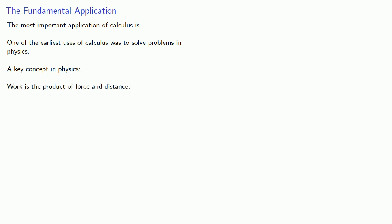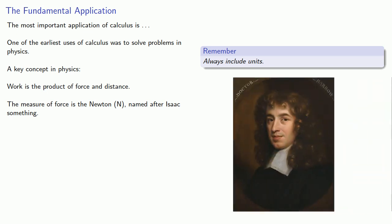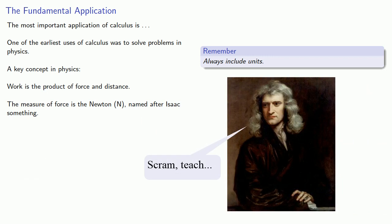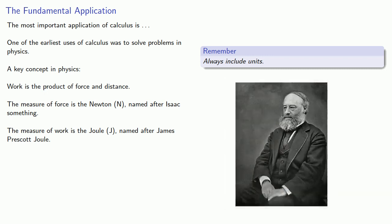Now, it's important to remember we should always include units, so let's talk a little bit about work. The measure of force is known as the Newton, named after Isaac something. I forget the last name. Meanwhile, the measure of work is the, well, there's some debate over exactly how to pronounce it. The standard accepted pronunciation is Joule. However, like the Newton, it is a person's name, and there's some evidence that the person called himself James Prescott Jowell.